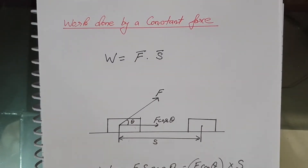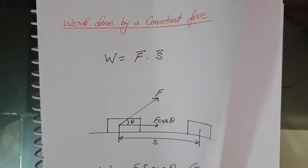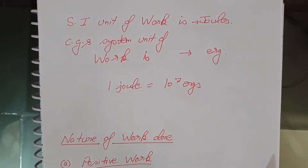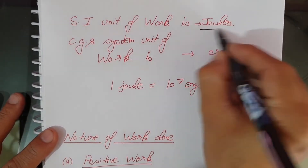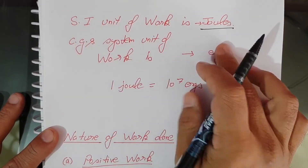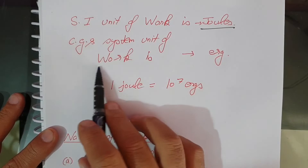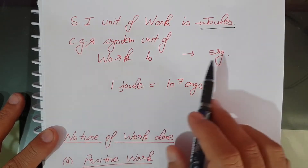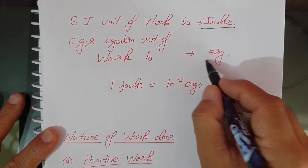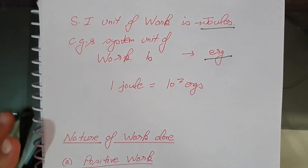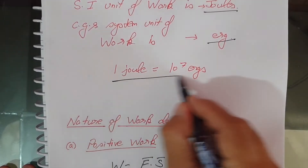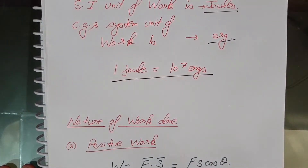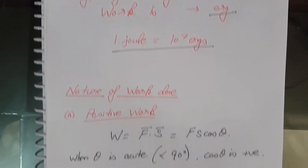The SI unit of work done is joules. In the CGS system, the unit of work is erg. The relation between joule and erg is: one joule equals 10 to the power 7 ergs.